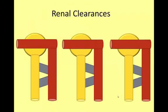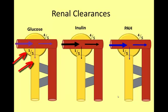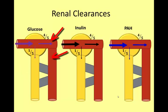We will be examining the clearance of three substances today: glucose, inulin, and PAH (para-aminohippuric acid). In the nephron, each of these substances enters the glomerulus and is freely filtered from the glomerular capillaries. With a normal filtration fraction, about one-fifth of the renal plasma flow passes into Bowman's space and the proximal tubule, while the other four-fifths passes into the efferent arteriole and the peritubular capillaries.